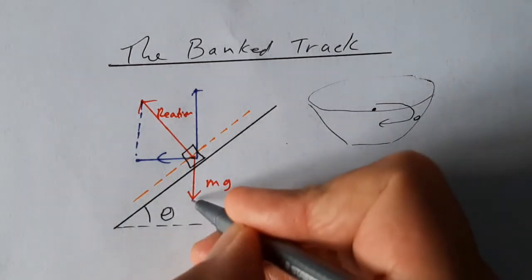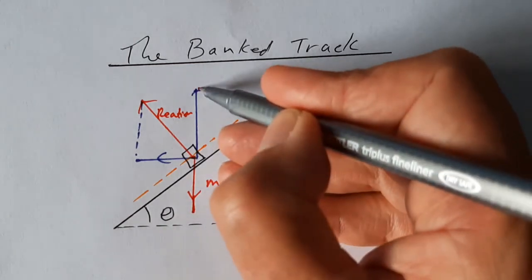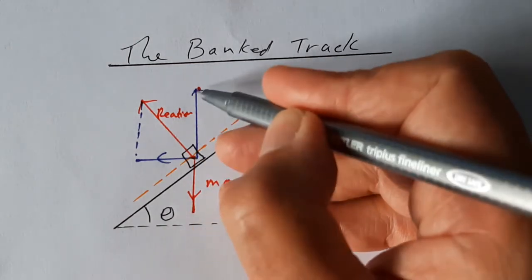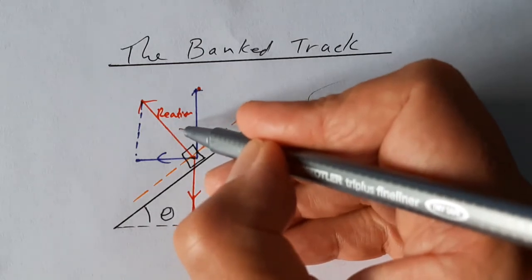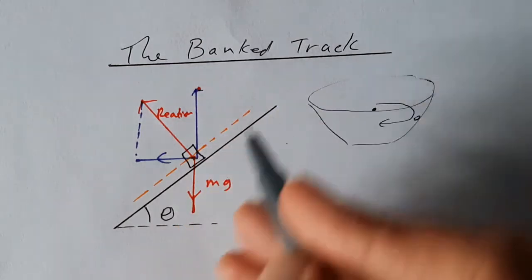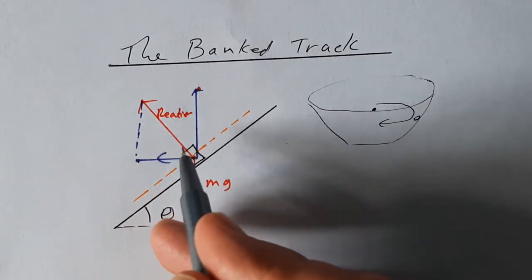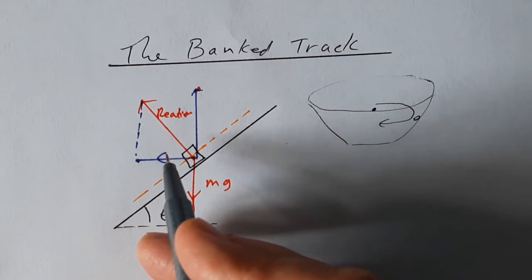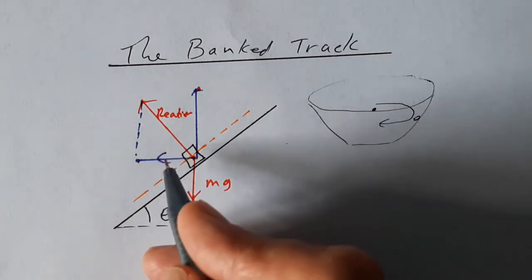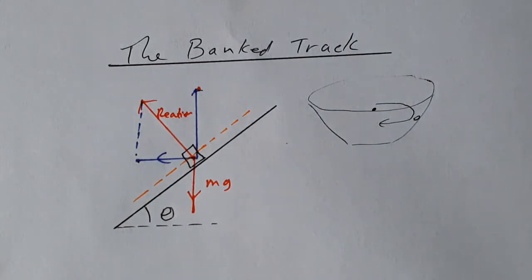And this weight mg is going to be exactly balanced by the vertical component of the reaction. So the reaction force has two components, a vertical component here and a horizontal component. So the blue lines are not new forces. They simply represent the two components of the reaction force, which is there.